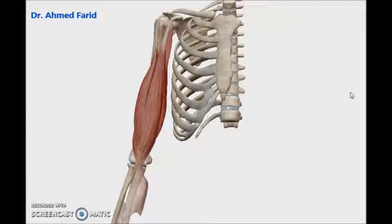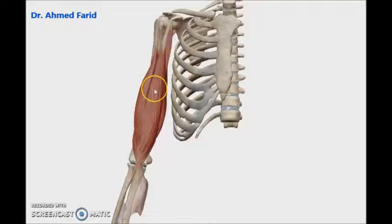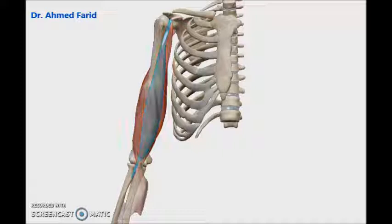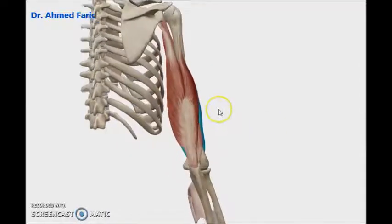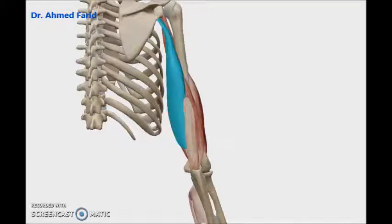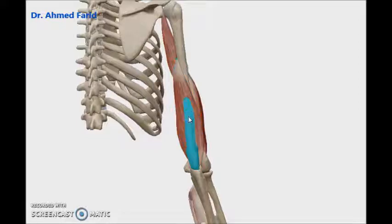I will start by naming the muscles present in the region of the arm. I have three muscles in the anterior aspect of the arm. Their names are: coracobrachialis muscle, biceps brachii muscle with its short head medially and its long head laterally, and deep to biceps I will find the brachialis muscle. Posteriorly I have the triceps brachii muscle with its long head, lateral head, and deep to both heads the medial head of triceps. And finally, this is the tendon of triceps.